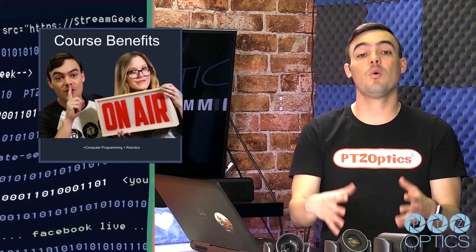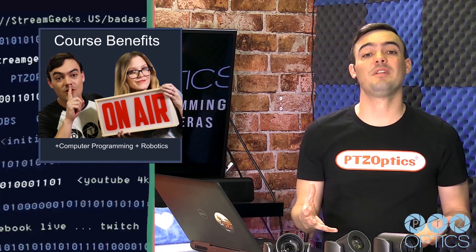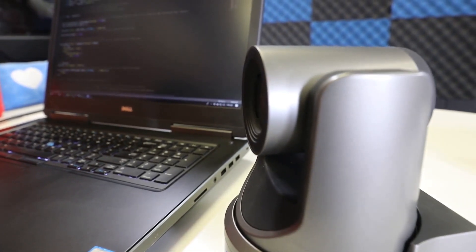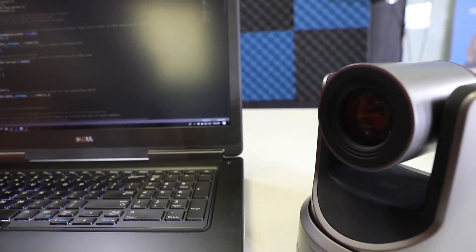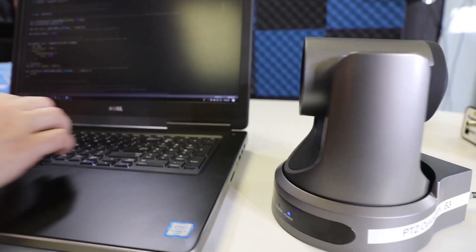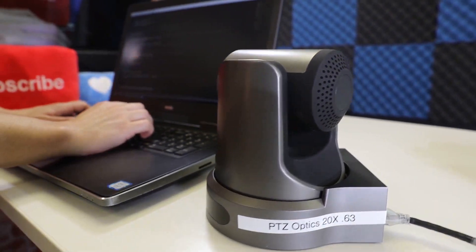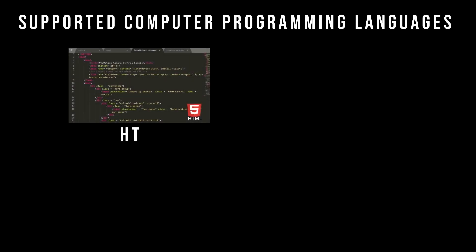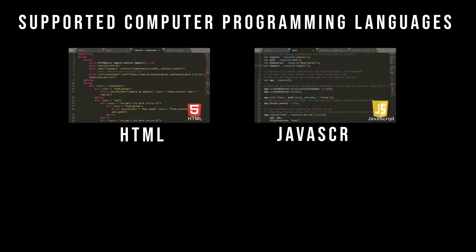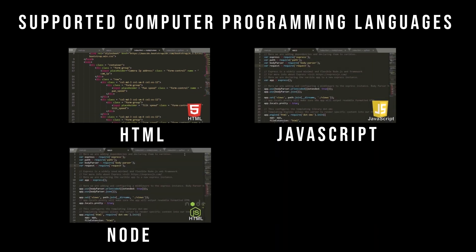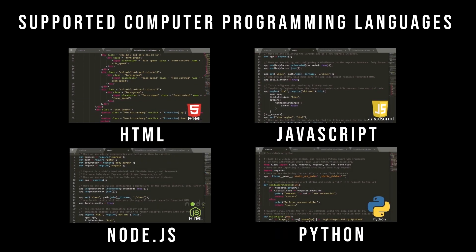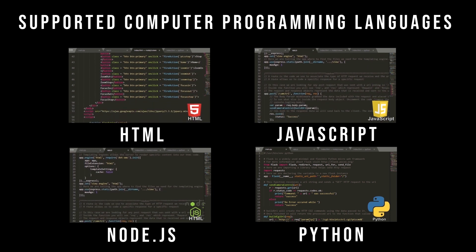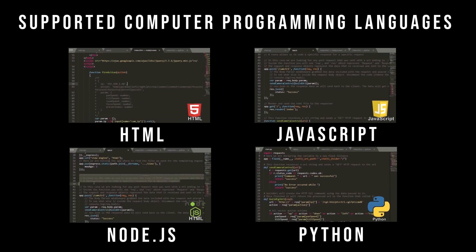The course benefits include the ability to take real computer programming languages like HTML, JavaScript, Node.js, Python, C, and C++ — some of the great programming languages — and learn how to use them in a real-world application where we're actually controlling robotics. Not only are you going to get great code examples, but a real-world opportunity to control a robotic device over an IP network.